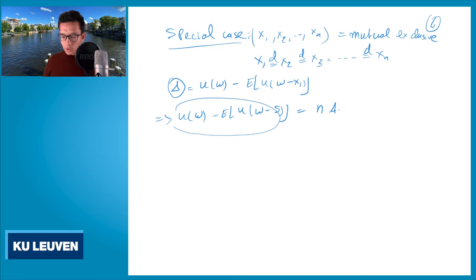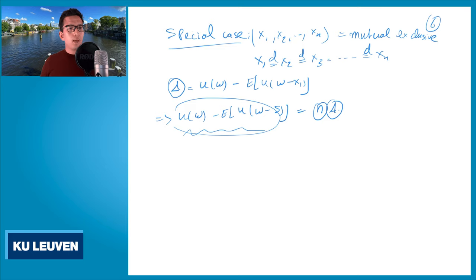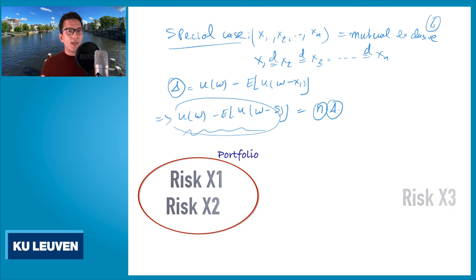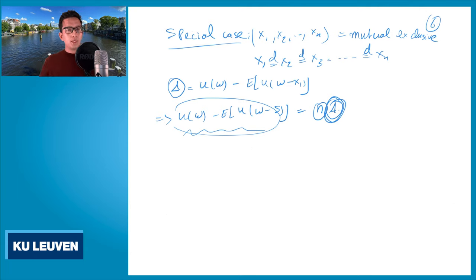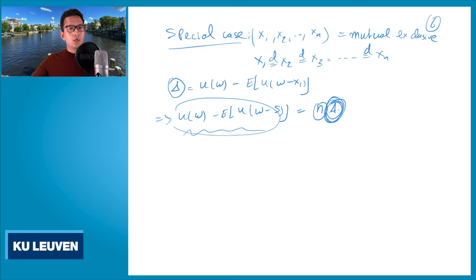The drop in utility when you suffer all the risks simultaneously is n times delta. So the drop in utility is a linear function: delta the drop of one risk, times n the number of risks you are adding. It also means that if you go from two to three risks, from four to five, or from 100 to 101 risks, the drop in utility is always delta — the effect of adding this extra risk to your portfolio is always delta because we have a linear function in the number of risks.